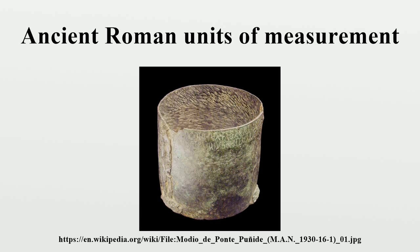Smith gives a value of 0.9708 English feet, or about 295.9 mm. An accepted modern value is 296 mm. The Roman foot was subdivided either like the Greek pous into 16 digiti or fingers, or into 12 unciae or inches. Frontinus writes in the 1st century AD that the digitus was used in Campania and most parts of Italy.